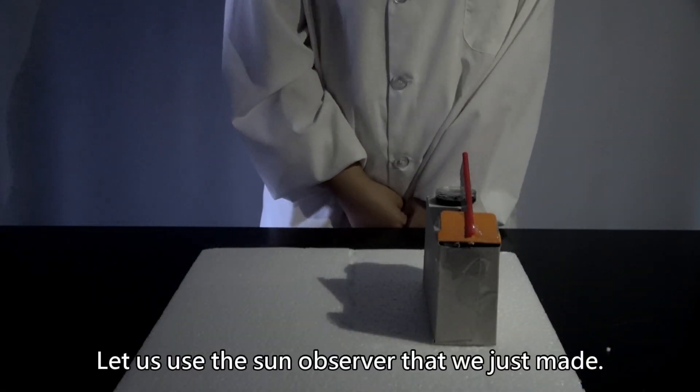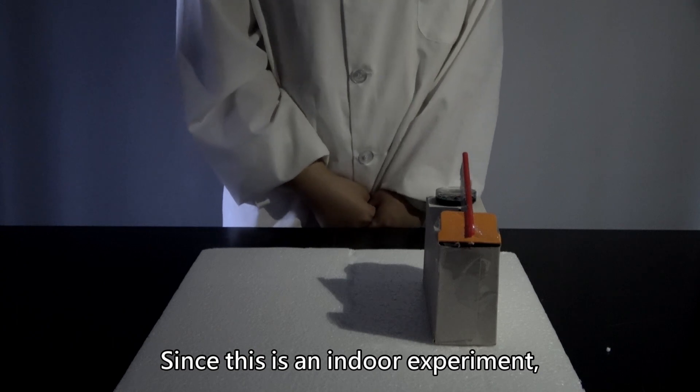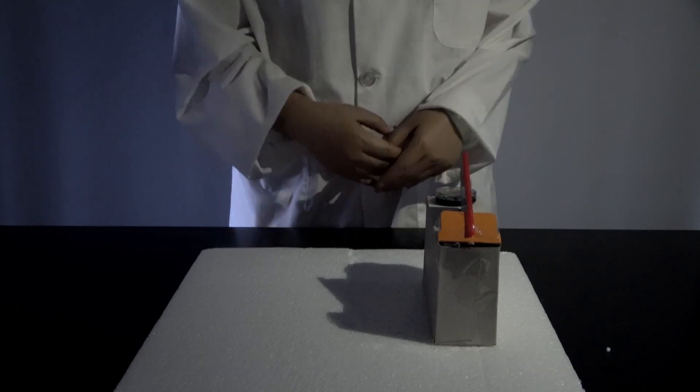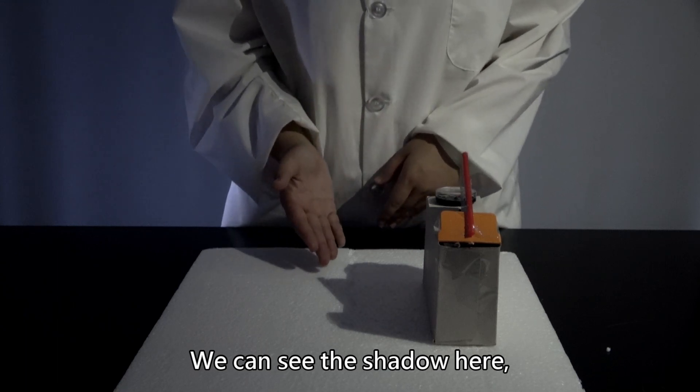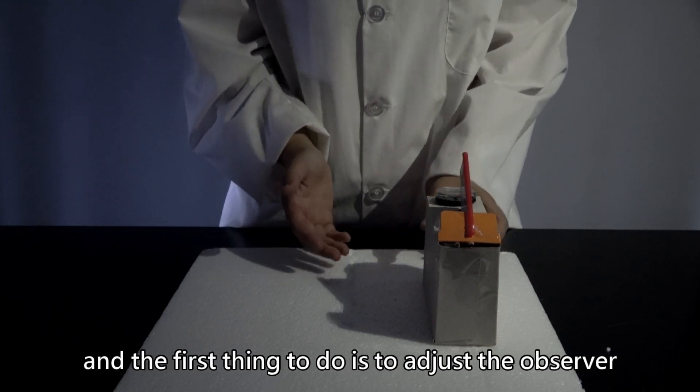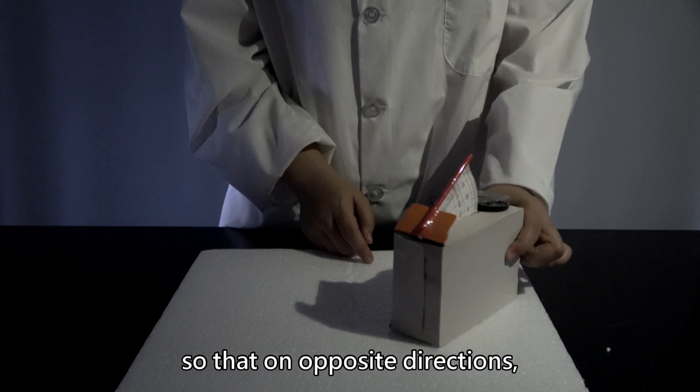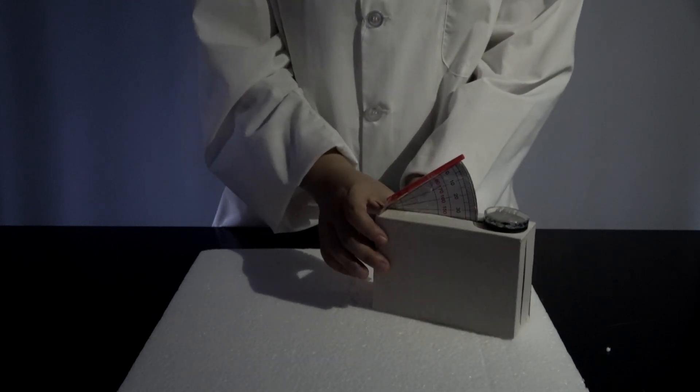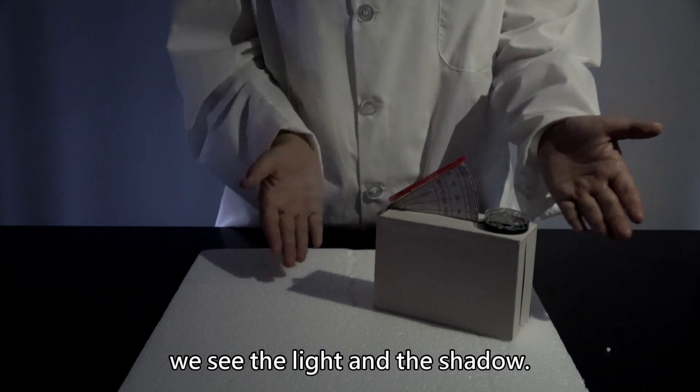Let's use the sun observer that we just made. Since this is an indoor experiment, our light source will be a bulb instead of sunlight. We can see the shadow here. The first thing to do is to adjust the observer so that on opposite directions, we see the light and the shadow.